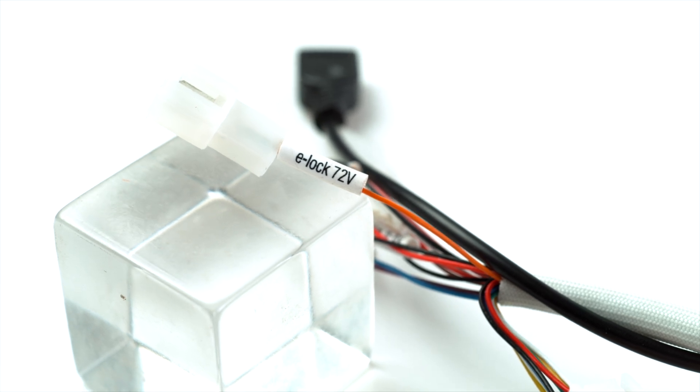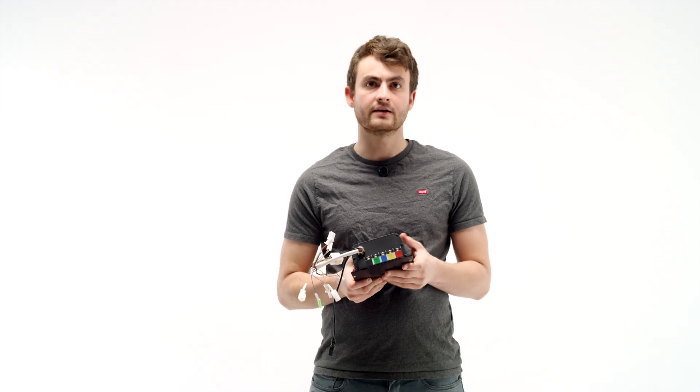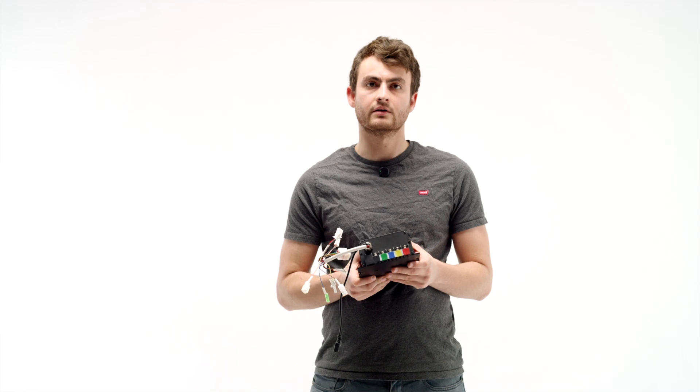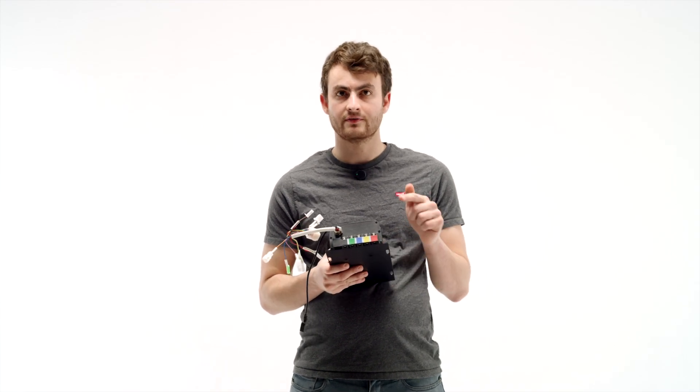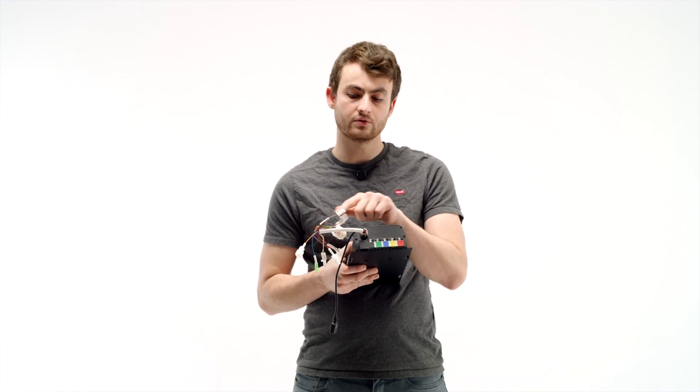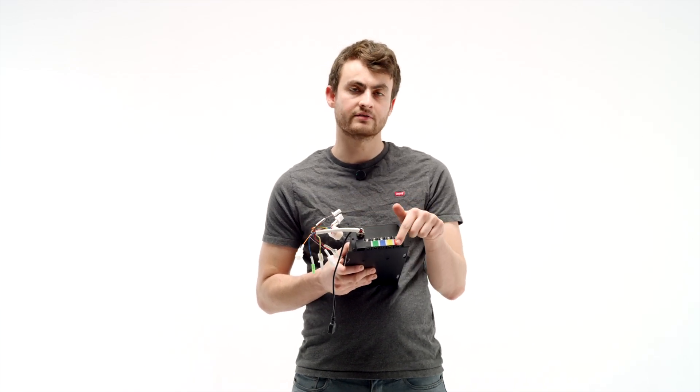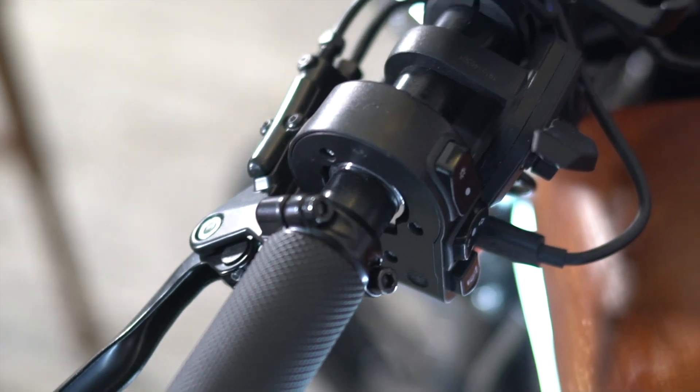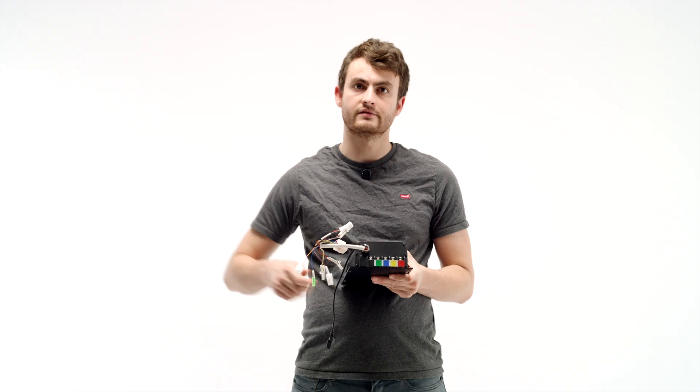The last wire to talk about here is this orange e-lock 72 volt switch. Since the battery is really high power you don't want to be disconnecting the main positive and negative all the time to turn the thing on and off. The way we bypass this is having the controller connected to the battery the whole time, but the controller only enables itself when this orange wire is connected to the battery positive. So that'll go through a switch we have typically on the handlebars or with a key on the side of the bike.